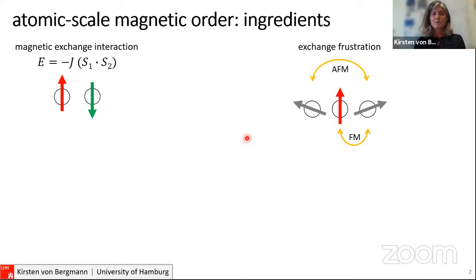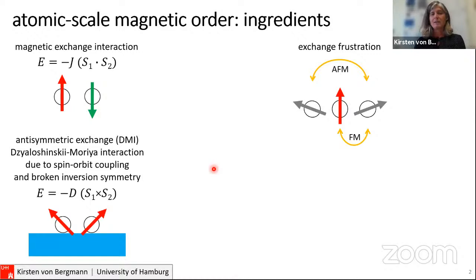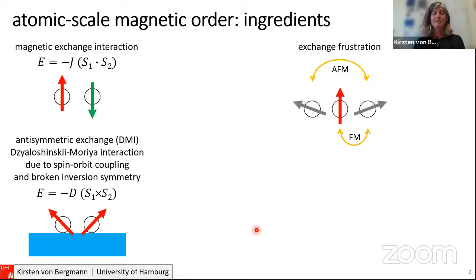We also have the Dzyaloshinskii-Moriya interaction (DMI), which arises due to spin-orbit coupling in broken inversion symmetry, and it can also lead to canting between nearest neighbor moments. Because we work typically at surfaces, we can always expect an impact of interface-induced DMI. This is the set of interactions I want to start my talk with, and in the second half there will be additional terms that can play a role.